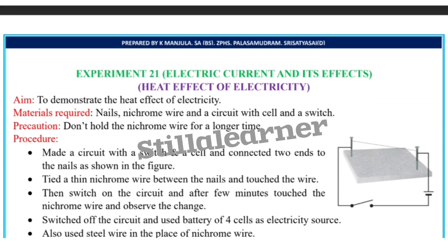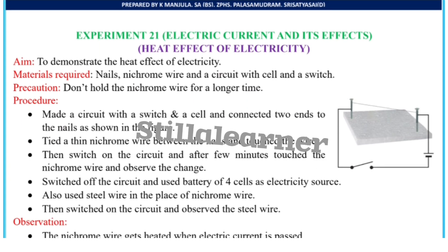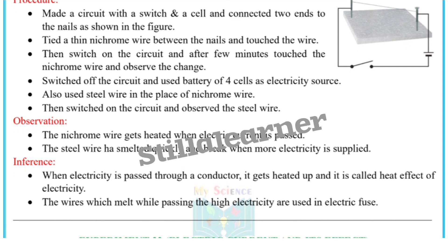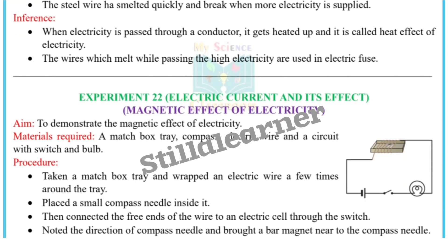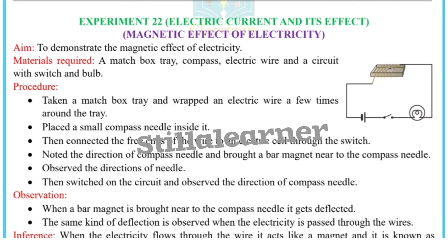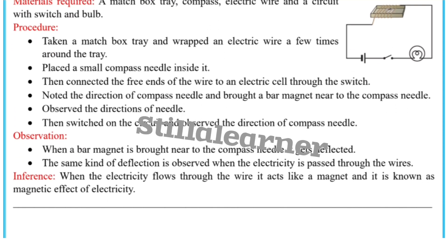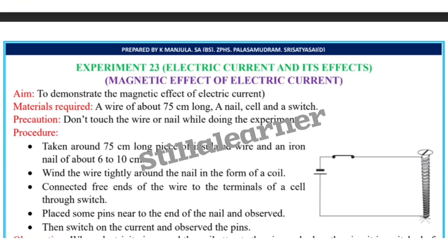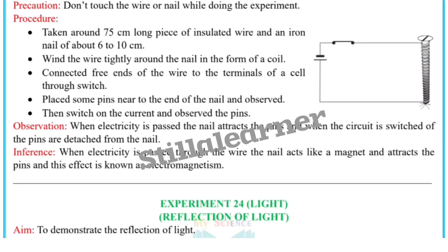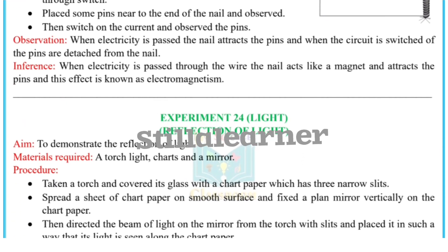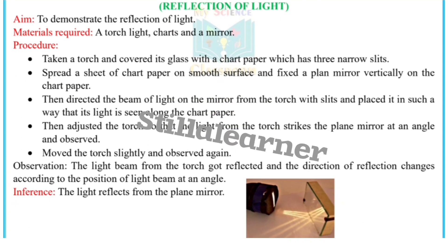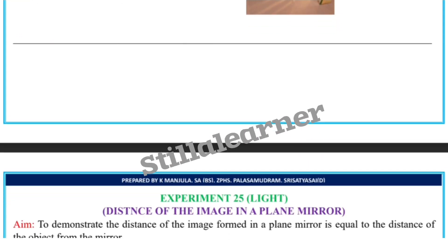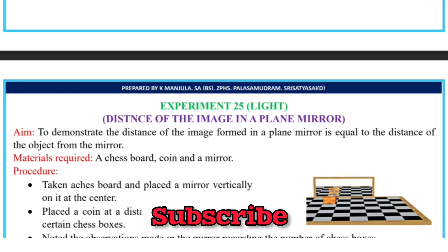Experiment number twenty-one is electricity current and its effects: heat effects of electricity. Experiment number twenty-two is again electricity current and its effects: magnetic effect of electricity. Experiment number twenty-three is electromagnetic effect of electric current.